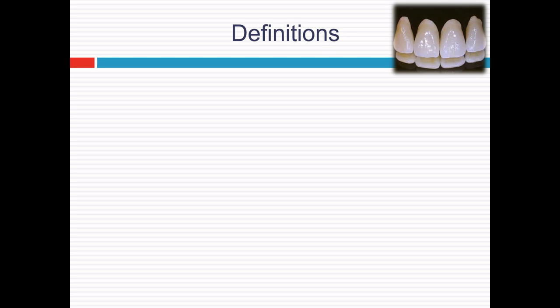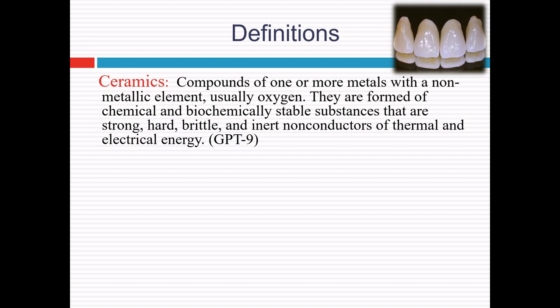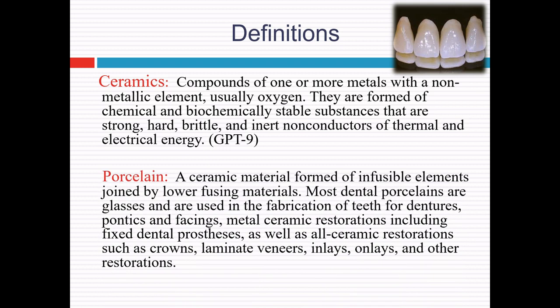GPT-9 defines ceramic as a compound of one or more metals with a non-metallic element, usually oxygen. They are formed of chemically and biochemically stable substances that are strong, hard, brittle, and inert non-conductors of thermal and electrical energy. The ADA specification number given to dental ceramics is 69. Porcelain is defined as a ceramic material formed of infusible elements joined by lower-fusing materials. Most dental porcelains are glasses used in fabrication of denture teeth, pontics, facings, metal-ceramic restorations, and all-ceramic restorations like crowns, laminate veneers, inlays, and onlays. Porcelain is a specific type of ceramic made by mixing kaolin, quartz, and feldspar in proper proportions and fired at high temperature.